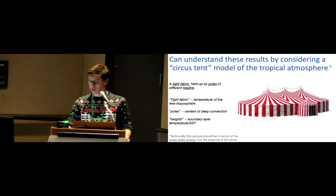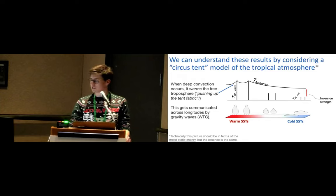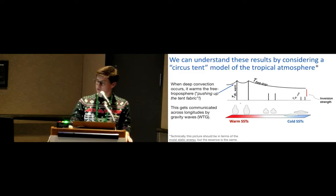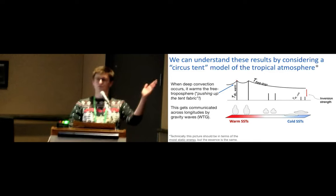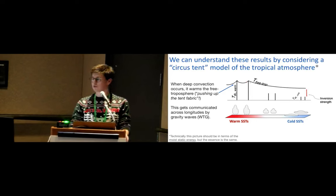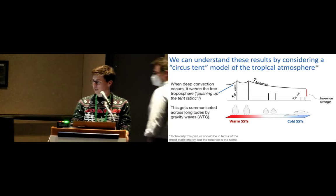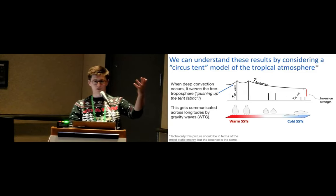You end up with a picture which looks a little bit more like this. So this is just showing a transect from kind of some warm SSTs, some cold SSTs. And what this is saying is that when you get deep convection, you've got a pole that's pushing up the temperature of the free troposphere in that region. Because as we said before, deep convection impacts the temperature of the whole column. And then, again, through weak temperature gradient arguments, this temperature doesn't just fall off straight away, but it kind of gets imprinted across the whole tropics, and you set up these inversions. So in this model, you've got the height of this pole, which is kind of telling you the temperature of the boundary layer here, relatively cold, and the difference between the height of the circus tent and the pole is giving you your inversion strength.